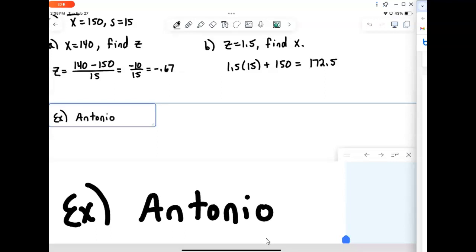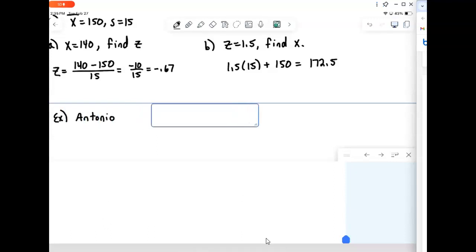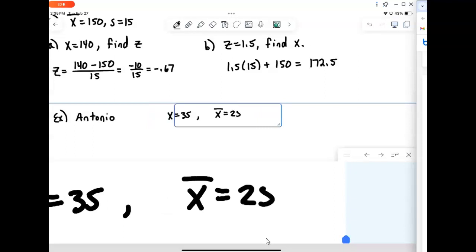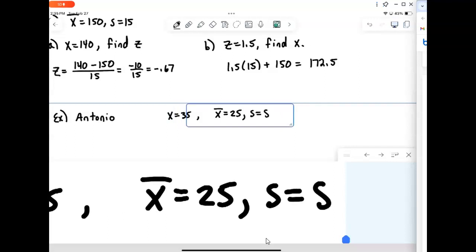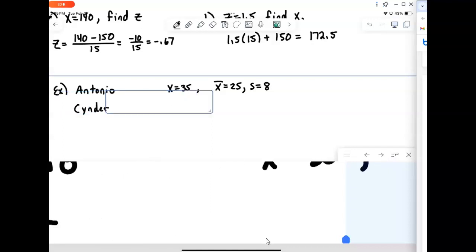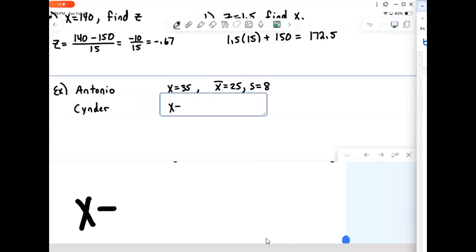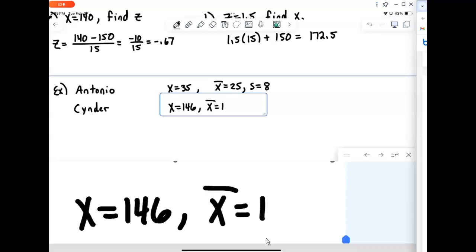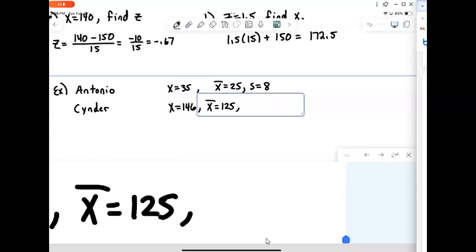For example, an individual called Antonio took a test and on his test he scored a 35. Now, the test he took had an average score of 25 and a standard deviation of 8. And Antonio's friend, Cinder, scored a 146 on their test. So you're thinking, oh wow, Cinder did much better.